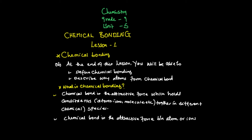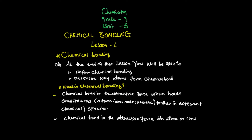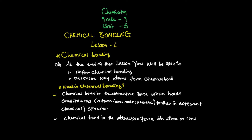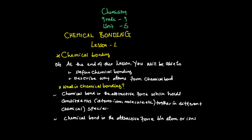Hello everyone, how are you? This is chemistry, grade 9, unit 5, new chapter — chemical bonding. So let's discuss this chapter. As you know, it concerns chemical bonding. You are new to this chapter because you didn't learn it before, either in grade 7 or grade 8. But it is so important and so interesting — it's not difficult to understand. You can understand it easily if you follow attentively until the end.